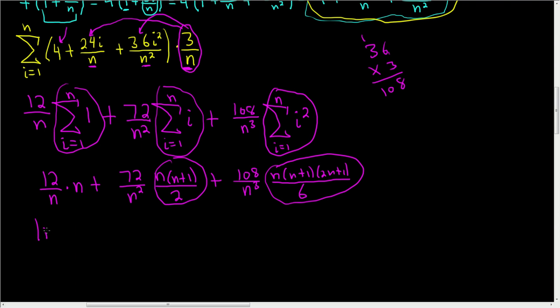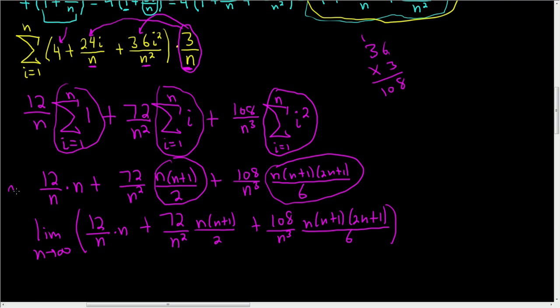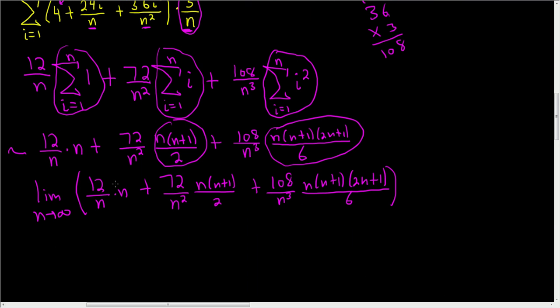Let's go ahead and take the limit. You can simplify it first. I won't. So this is the limit as n approaches infinity of 12 over n times n plus 72 over n squared. Just writing it down again. I'm not doing anything here. I'm just writing it down really fast. So n, n plus 1, 2n, just copy-paste. I probably could have cheated, and I could have written the limit sign over here. But so all I did was write the limit sign around everything that we had. And now let's take the limit carefully.